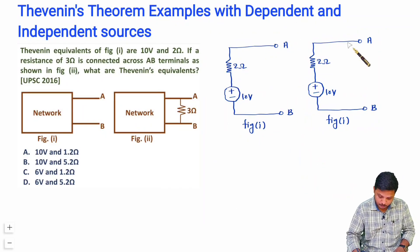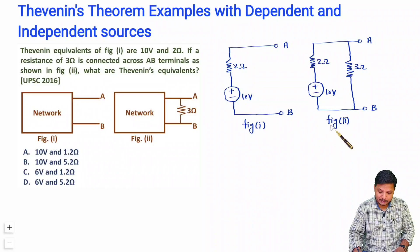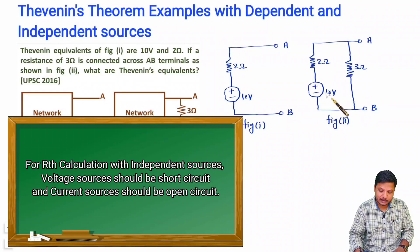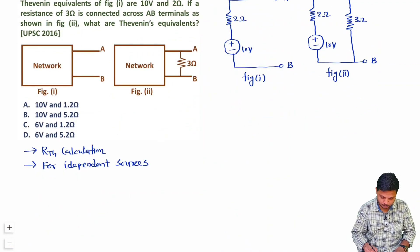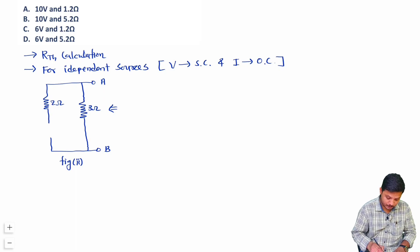Let me draw Figure 2. In Figure 2 we are connecting the 3-ohm resistor. Now we identify the equivalent Thevenin's resistance of Figure 2. When you want the equivalent Thevenin's resistance, you need to check whether the circuit contains dependent or independent sources. This is an independent source case. For independent sources, we provide a short circuit across voltage sources and an open circuit across current sources. For RTH calculation, I will short circuit the voltage source.